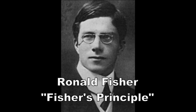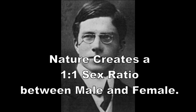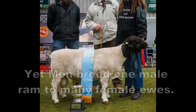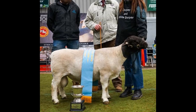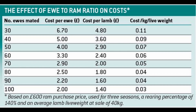In 1930, the geneticist Ronald Fisher outlined his Fisher Principle, which showed how nature naturally creates a one-to-one sex ratio between male and female. Yet men will take a single superior male and try to breed as many females as possible with that single male. Here's a spreadsheet from the United Kingdom that shows how, if you purchase a 600-pound sterling ram, what the cost is going to be to mate with 30, 40, 50, or even 100 ewes.